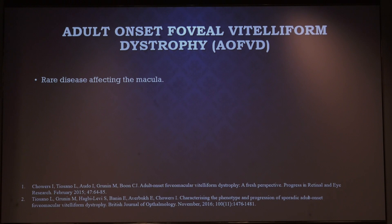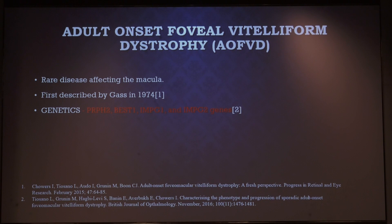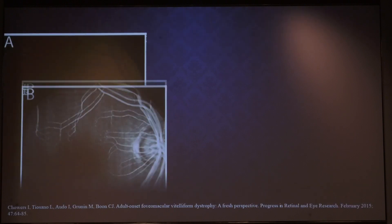So what is AFVD? It is a rare disease affecting the macula. It was first described by Gass in 1974. The basic genes involved are PRPH2, BEST1, IMPG1, and IMPG2, and onset is between the 3rd and 5th decade.